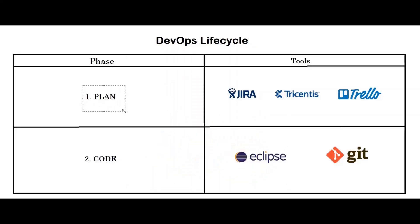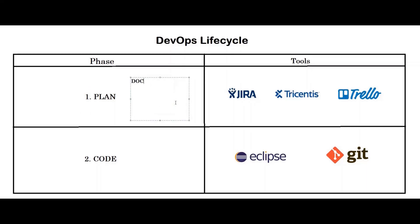The first stage of the DevOps lifecycle is planning. This is where you plan and create the vision for your project. It is mostly a documented phase where you create high-level document files for your project. The tools used in the planning phase are Jira, Tricentis, and Trello. Once planning is done, then comes the coding part.